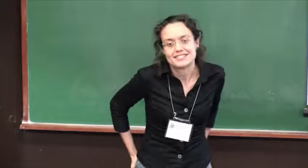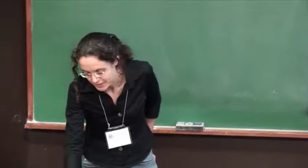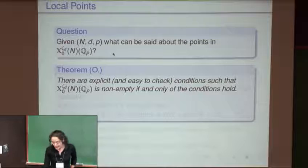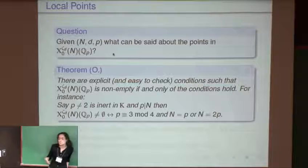Let's say X₀(N) is an elliptic curve. The Atkin-Lehner involution is an automorphism of the curve, but not as an elliptic curve automorphism — it does not fix the identity. It's just an automorphism as a genus 1 curve. Given a point x, it negates x and adds a certain fixed point S, where S depends on W_N. The conditions on the explicit rational points of the twisted curve are easy to check.